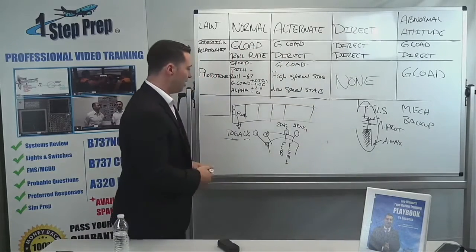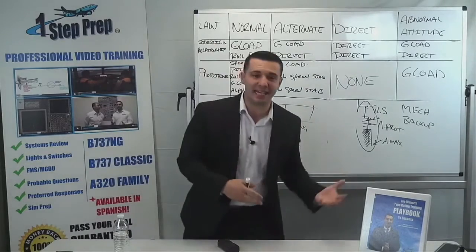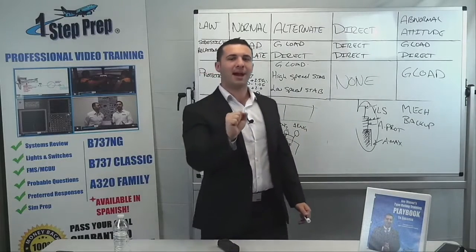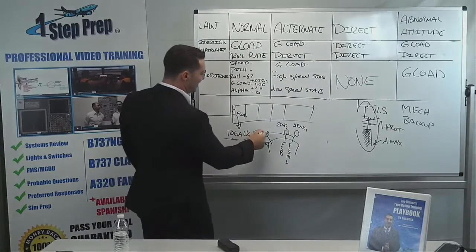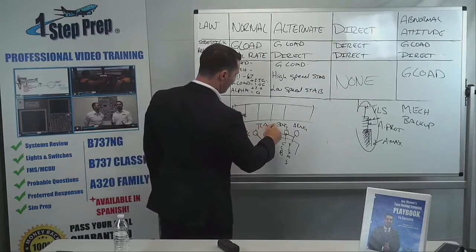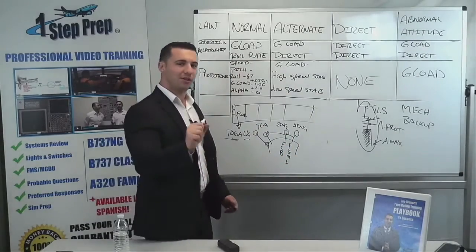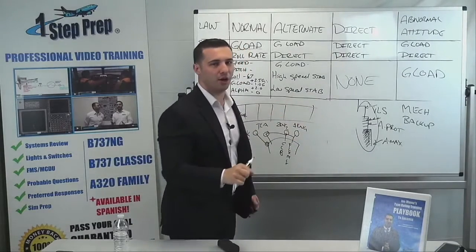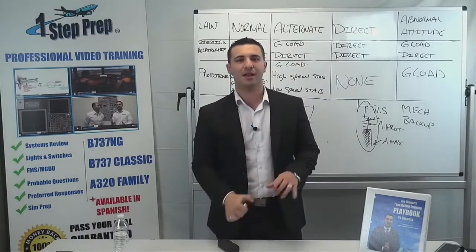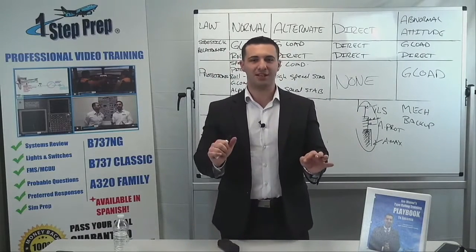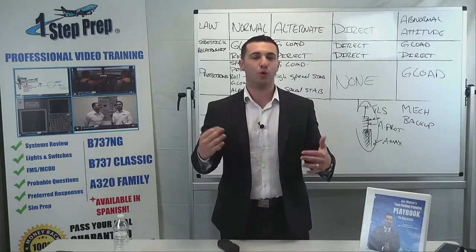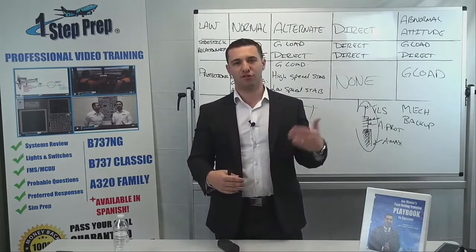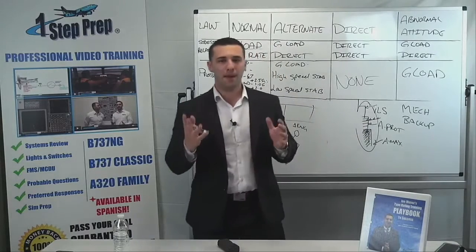Frequently you will hear instructors tell you the technique of match and mash. What that suggests is we match the thrust lever angle — commonly referred to as the TLA, which is visible on the engine warning display on top where our engine gauges are. So we match the thrust lever angle to the actual thrust output, which would mean bringing our thrust levers to toga, then clicking it off. That's a technique so that when you disconnect the auto thrust, you do not have a so-called uncommanded fluctuation of thrust — where maybe it's a little bit aft of toga and you're not expecting the engines to spool down. That's why a lot of instructors will tell you match and mash.